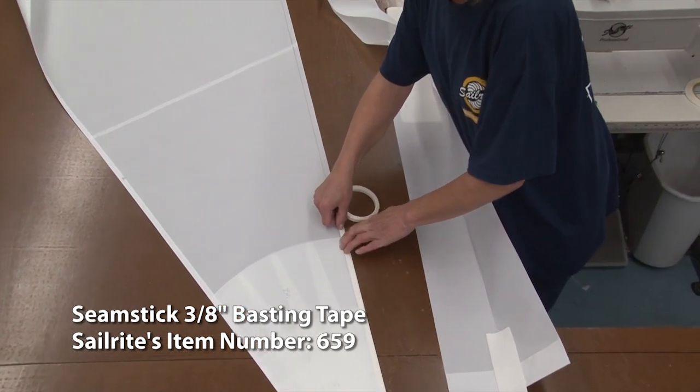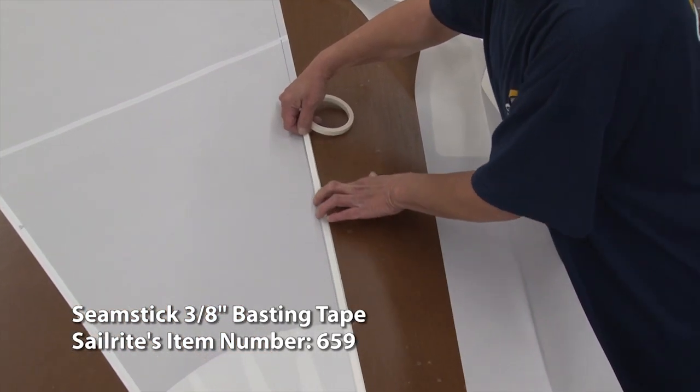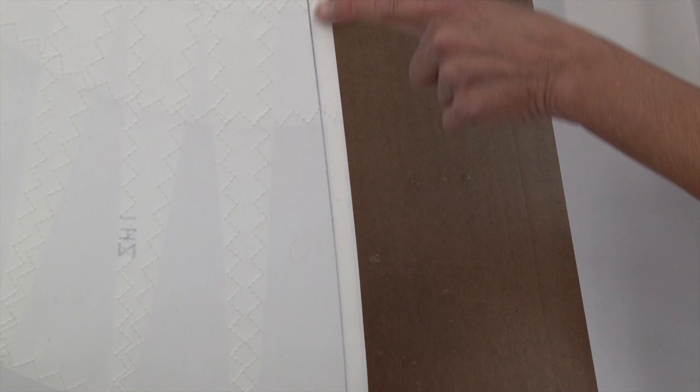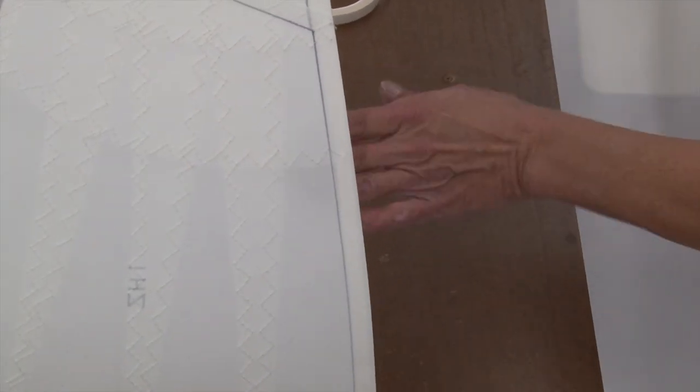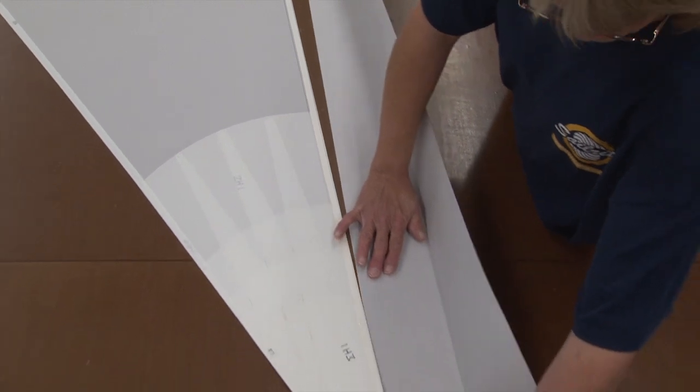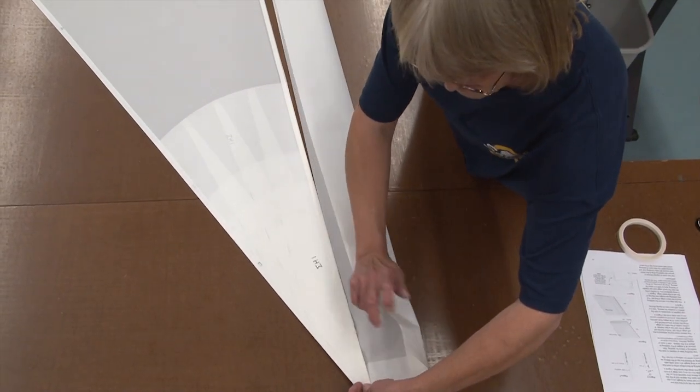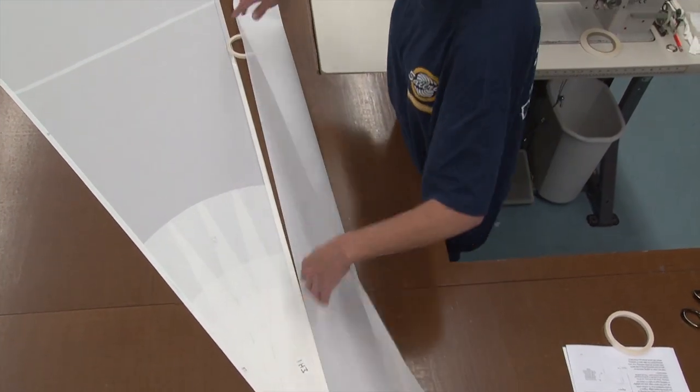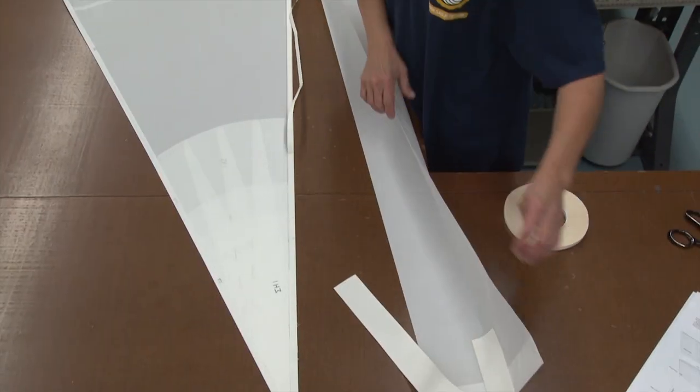I'm running seamstick down the seam line on the edge where the sleeve is marked for the sleeve to be put on. And you're going to want to put seamstick on both sides of the sail and that way when you get ready to lay this up you'll be able to stick it down onto the back and stick it down onto the front to hold it in place while you sew it on.